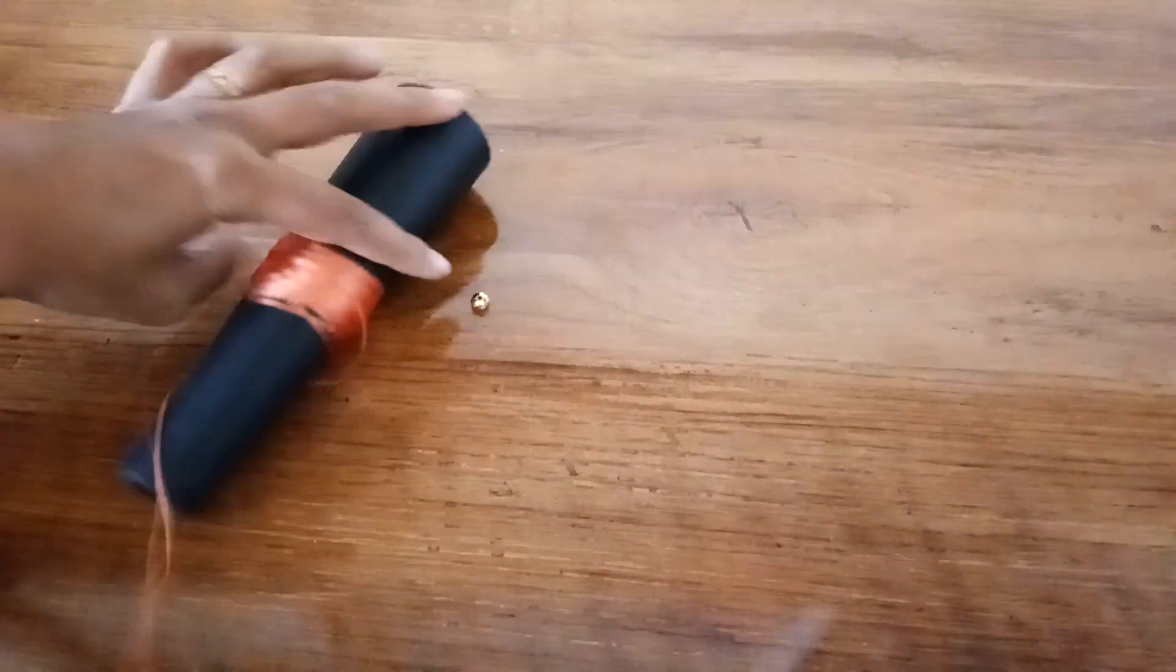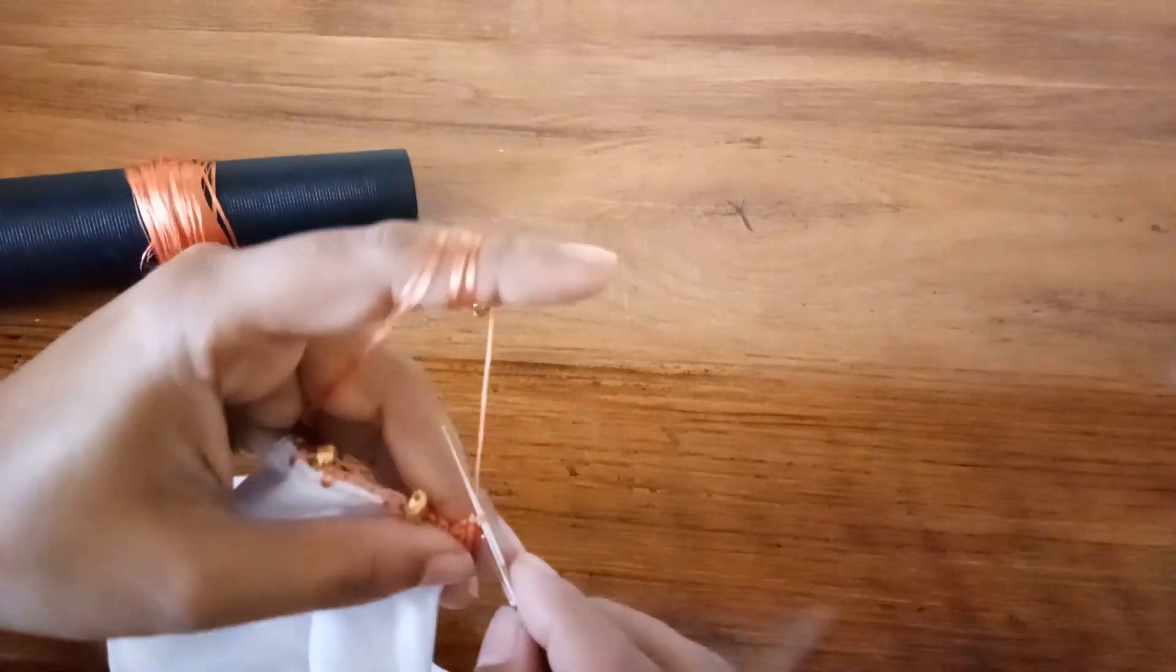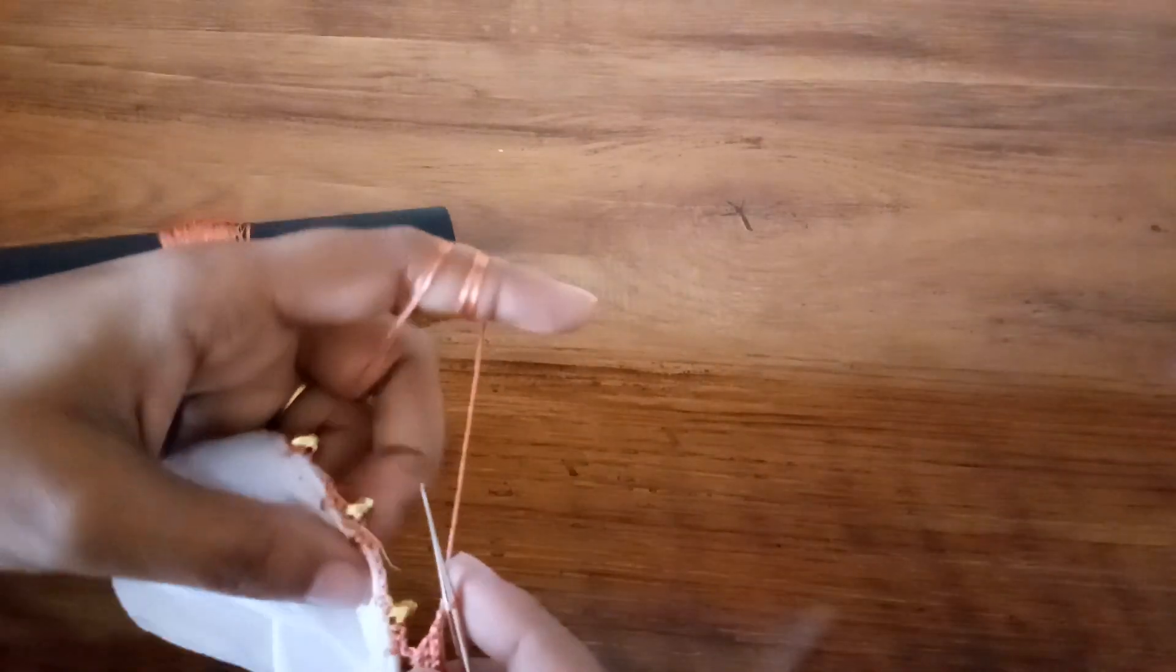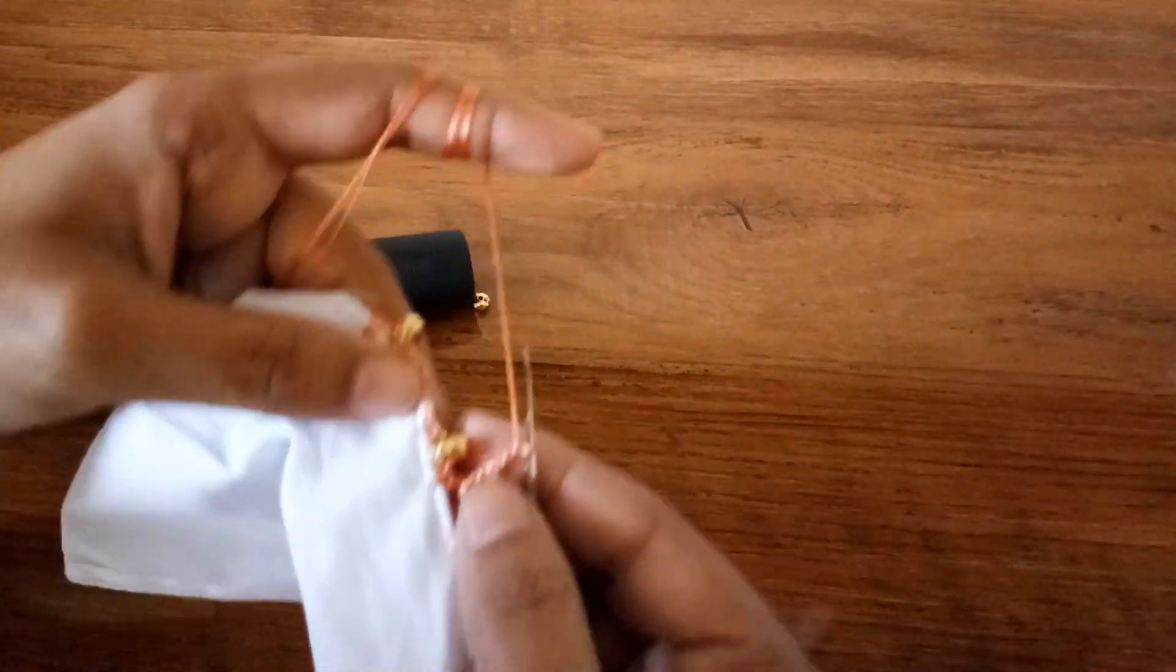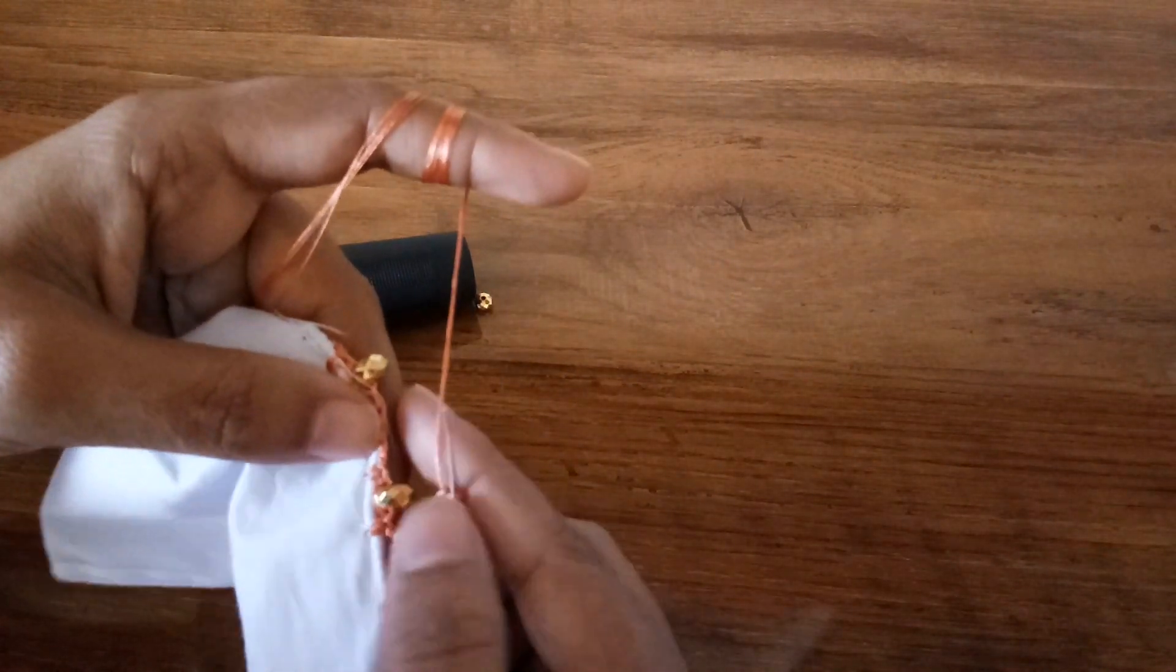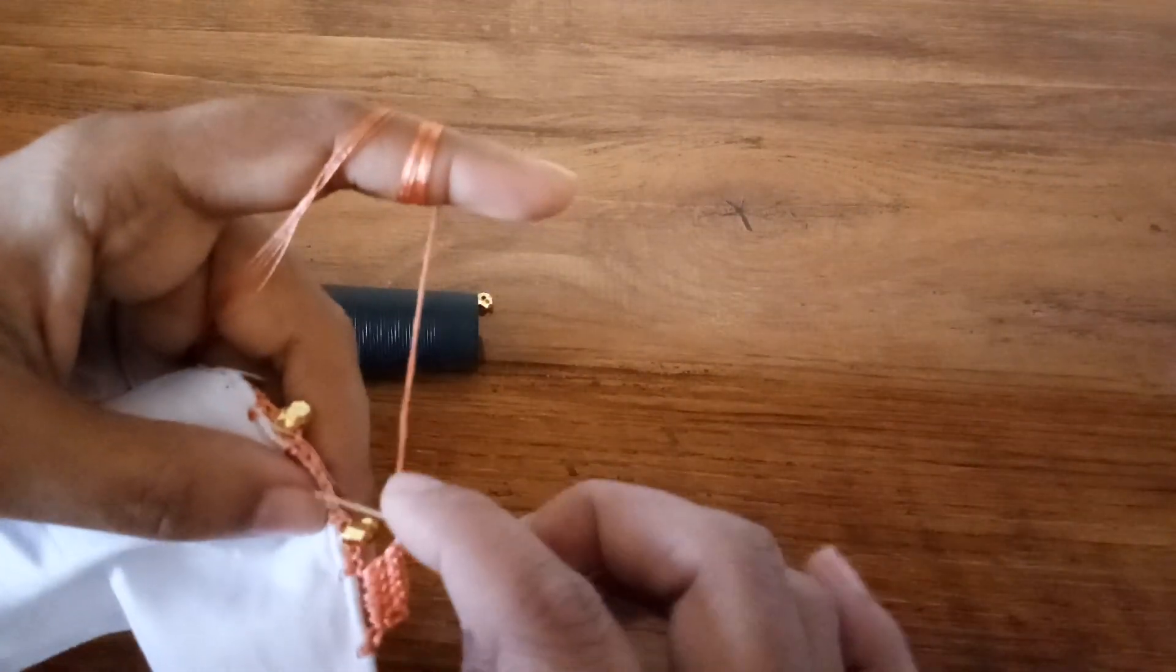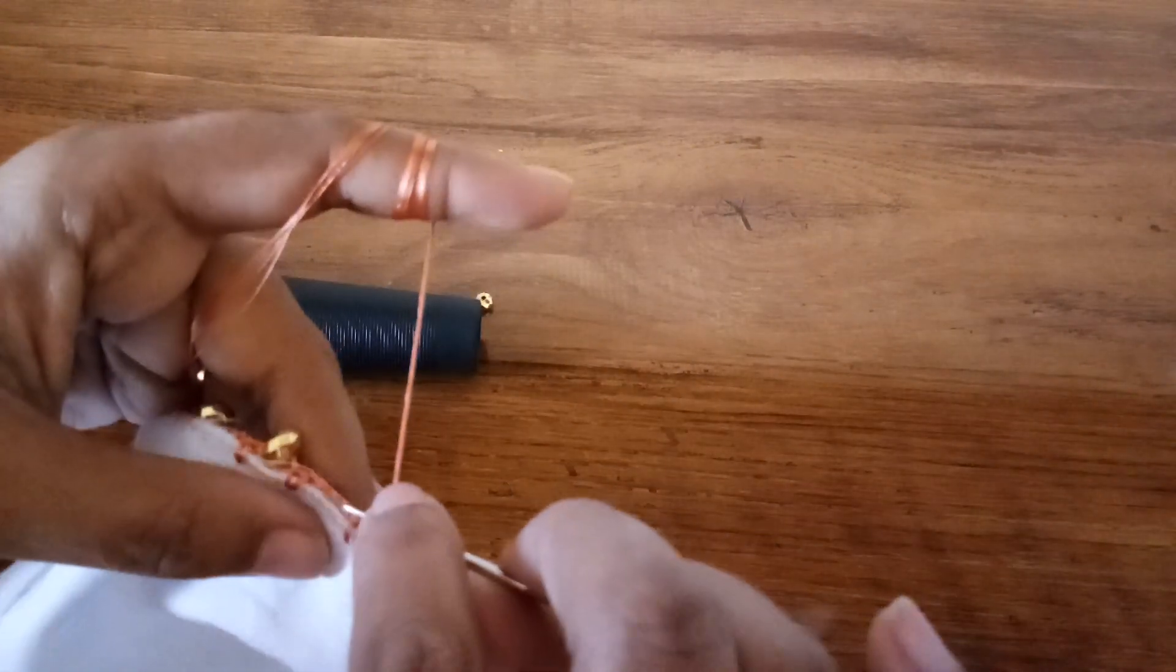Now wherever we have bead, we should add two chains. Depending on the bead you're taking, I've taken a small crystal bead size, so I'm taking only two chains. If you have a long bead, check the chains according to your bead.